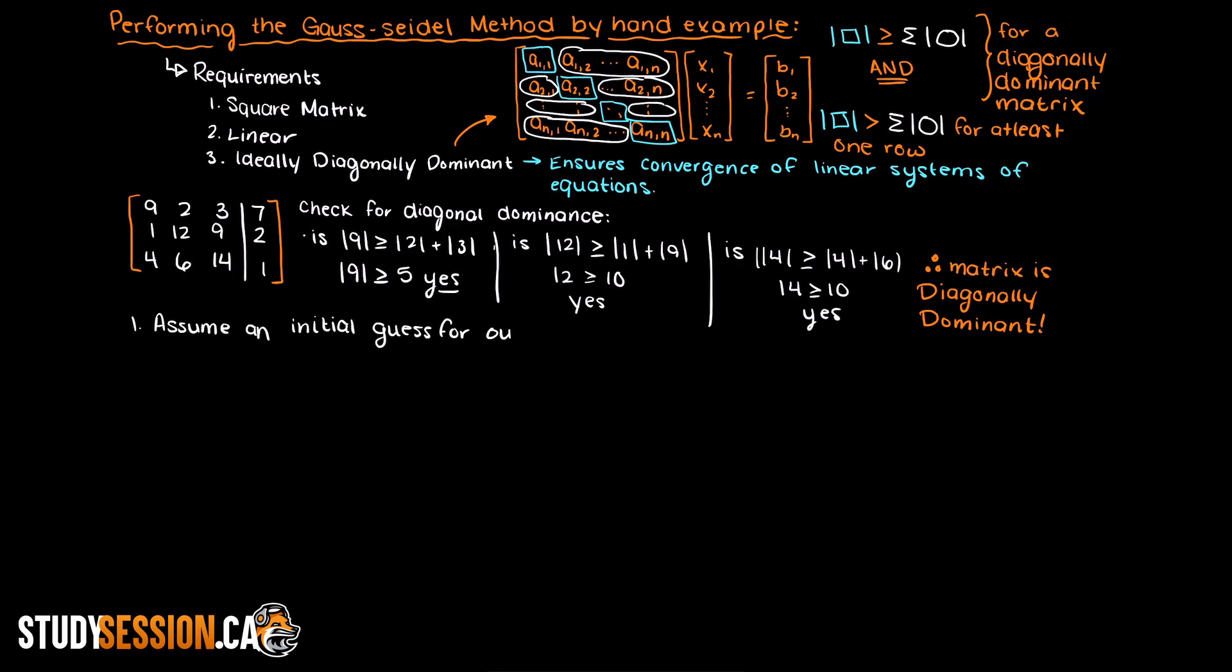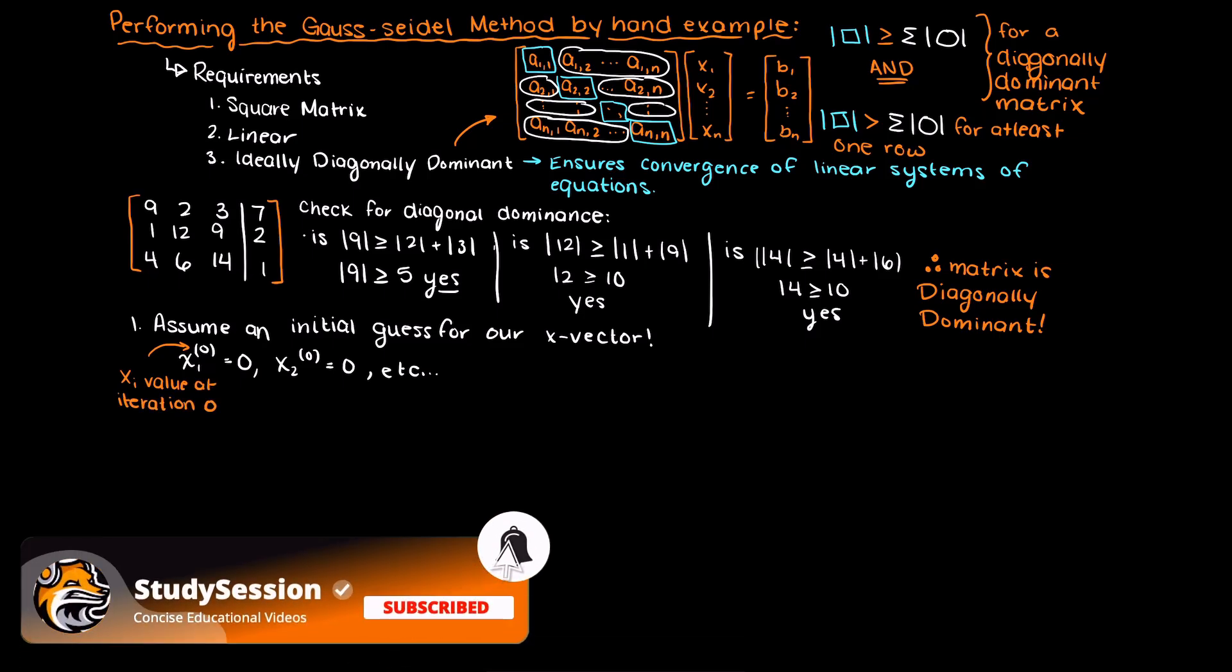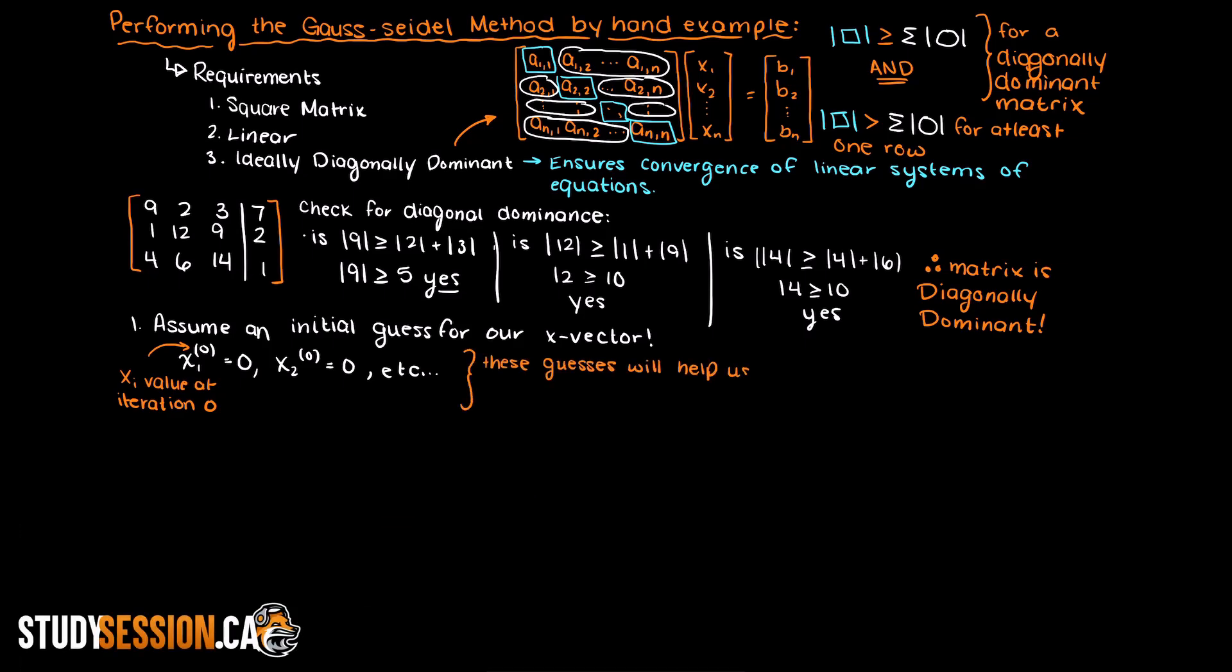Firstly, we need to make some assumptions about our x vector values. As a rule of thumb, we commonly use a zero matrix as our initial guess unless more information is given to us. So a zero matrix means that all of our x values we initially are assuming they are all zero. These values will then aid us to get our next iteration and thus improve our guess for the x values.